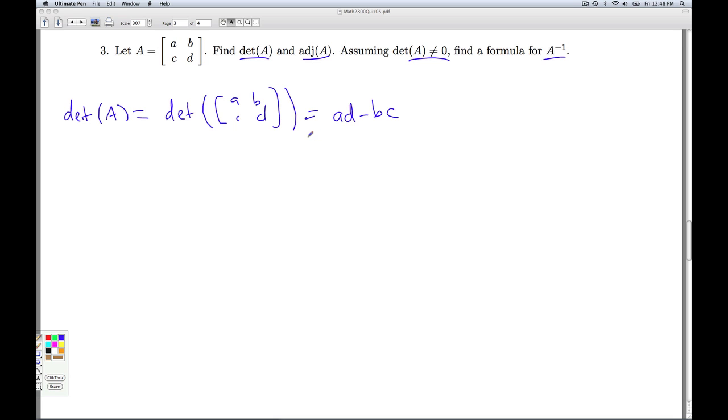So that's the determinant of A. To find the adjoint of A, we need to go through and find all the cofactors. Okay, so how do you find the cofactors? C1,1. Well, that's the signed minors. So this is negative 1 to the 1 plus 1 times the determinant you get by deleting the first row, first column. That's just going to give me D.